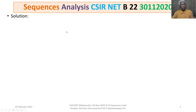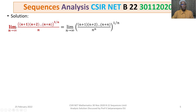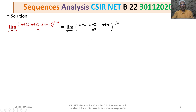Let us now discuss the solution in detail. We have limit n tends to infinity of (n+1)(n+2)···(n+n) to the power 1/n, divided by n. We rewrite this as limit n tends to infinity of a_n to the power 1/n, where a_n is the quotient (n+1)(n+2)···(n+n) divided by n^n.